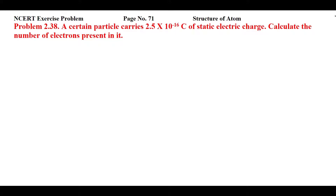Students, this is NCERT exercise problem 2.38 from page number 71 of Structure of Atom. The problem statement reads: a certain particle carries 2.5 × 10⁻¹⁶ coulomb of static electric charge. Calculate the number of electrons present in it.